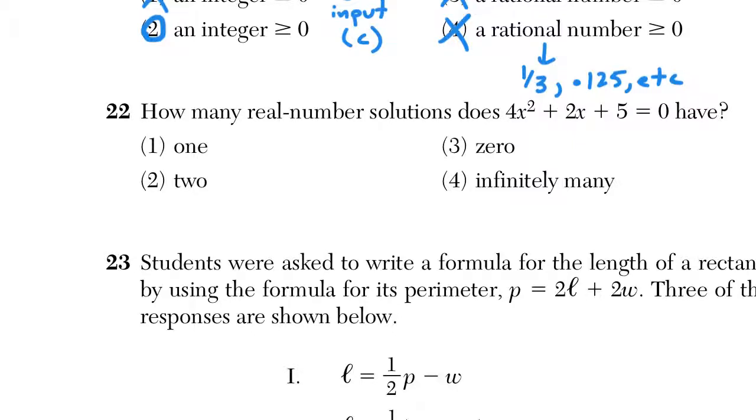For 22, how many real number solutions does 4x squared plus 2x plus 5 equals zero have? So we don't actually have to solve it. It wants to know how many answers does it have. And you haven't even learned about this yet or very briefly. We're ignoring any imaginary aspects or components here. So that's why it says real number, if you were curious.